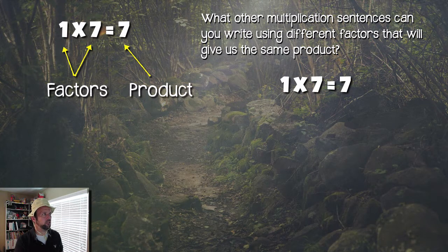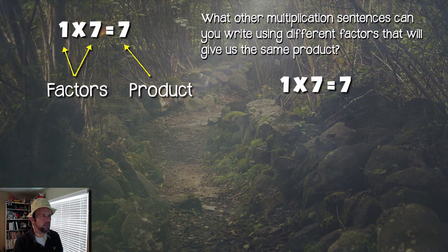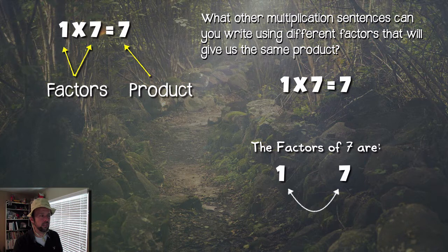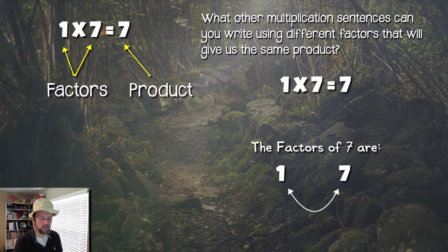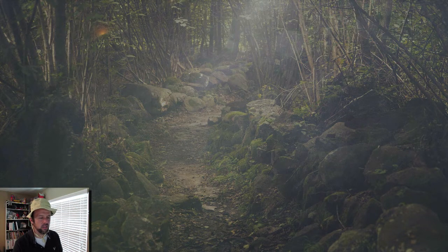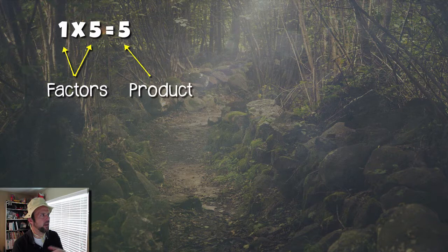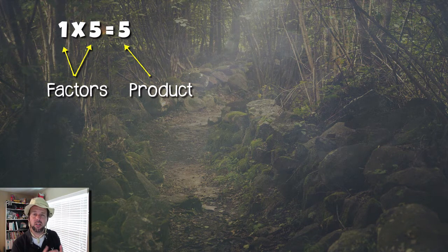There's nothing else that gives me the product of 7 besides 1 and 7. How is this different than all the other numbers we've found? All the other products had multiple factors — more than one set of factors. But this one has only 1 and 7. So the factors of 7 are 1 and 7 — that's it. Let's turn around a little bit and see if we can find something else. Oh, there's another one — 1 and 5. The factors are 1 and 5, the product is 5. Let's explore and see if we can find some other factors of the number 5.